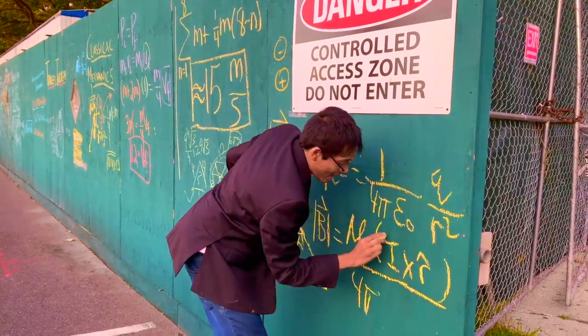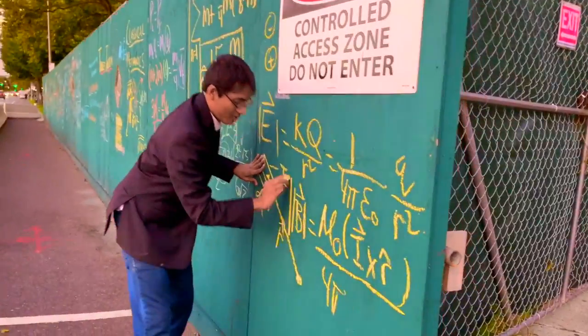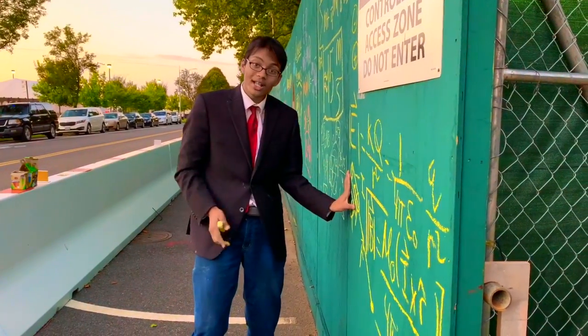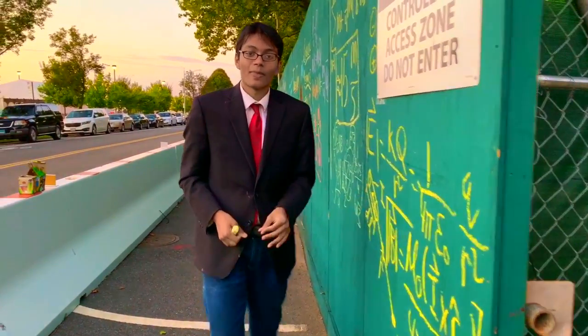That's going to be the cross product between the current and the position. Alright folks, that's the Biot-Savart law - that's how you find the magnetic fields due to a small current element, and we'll see you next time.